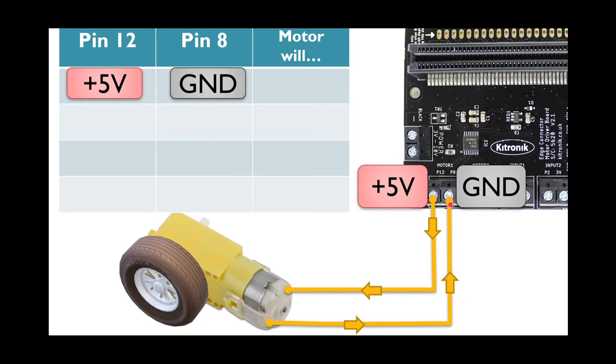Then we'll have a current flowing from positive to negative. Conventional current goes from positive through the motor and to negative. So there is a flow of electricity. There is current, electrical current. So the motor will move in some direction. Let's call that direction forwards.